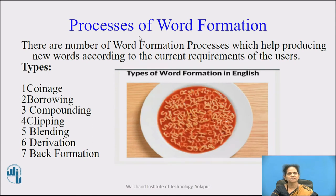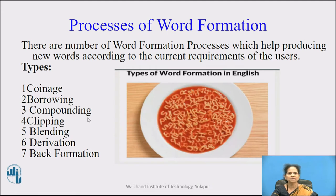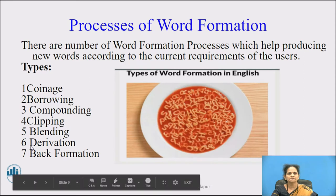Now let us see the processes of word formation. There are a number of word formation processes which help in producing new words according to the current requirements of the users. Here are some of the word formation types: the first one is coinage, the second one borrowing, third one compounding, fourth one clipping, fifth one blending, sixth one derivation, and the seventh one back formation. All these types we are discussing during this word formation mechanism.